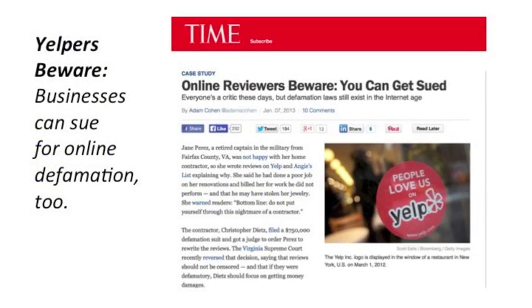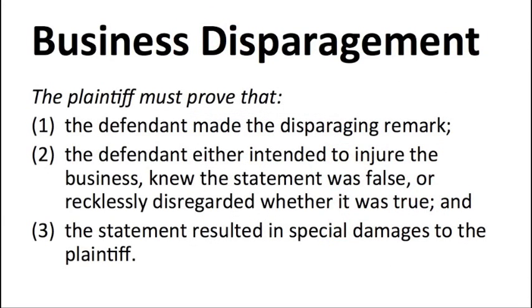People aren't the only ones who can be defamed. Business defamation, also known as business disparagement, is another potential pitfall relating to online speech. It involves belittling someone's business, goods, or services with a remark that is false or misleading but not necessarily defamatory. To succeed in a business disparagement case, the plaintiff must prove that the defendant made the disparaging remark, the defendant either intended to injure the business, knew the statement was false, or recklessly disregarded whether it was true, and the statement resulted in special damages to the plaintiff. It is very difficult for businesses to win such cases because the actual malice requirement is so high.